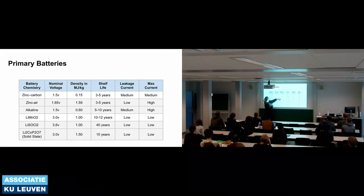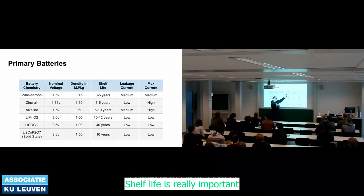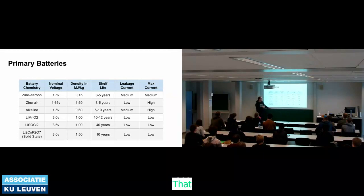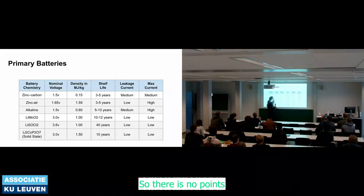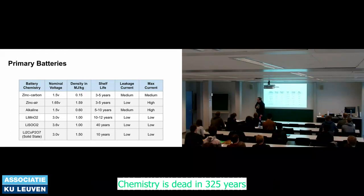Shelf life is really important — the IoT has perhaps been the first domain where operational lifetimes start to collide with battery shelf lives. There's no point having a system designed to operate for 40 years if the battery chemistry is dead in 3–5 years. Leakage current also matters: how long before the charge just evaporates. Finally, maximum current support varies a lot — this determines whether the battery can provide enough instantaneous power for your biggest job.